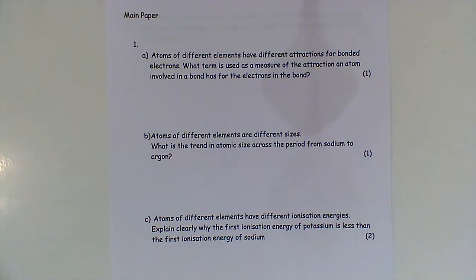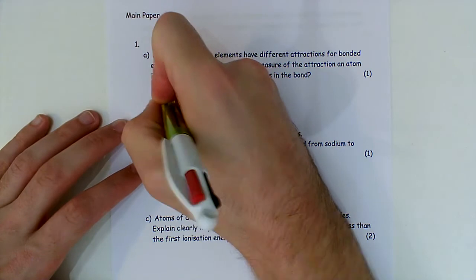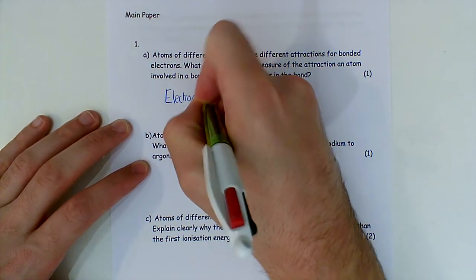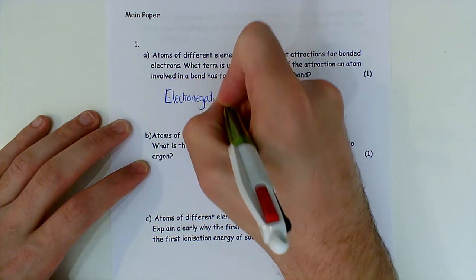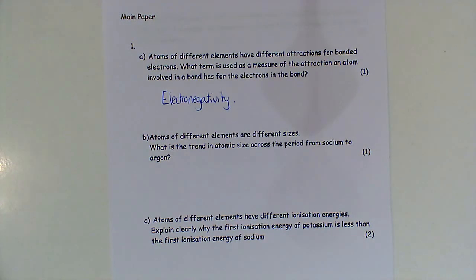First question: atoms of different elements have different attractions for bonded electrons. What term is used as a measure of the attraction an atom involved in a bond has for the electrons in the bond? That is electronegativity. Don't bother writing sentences — just write single words if you can.